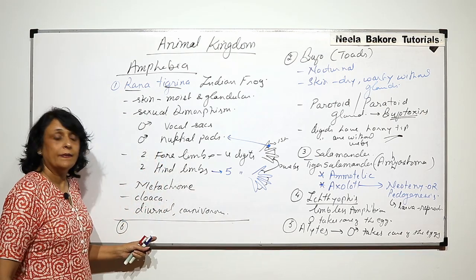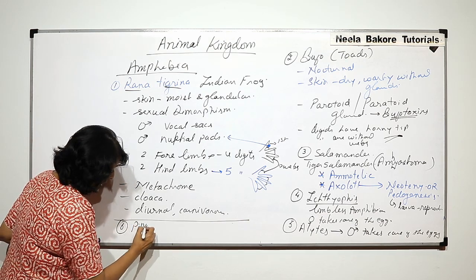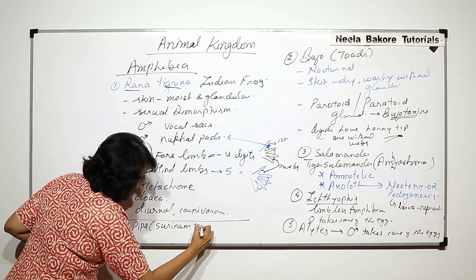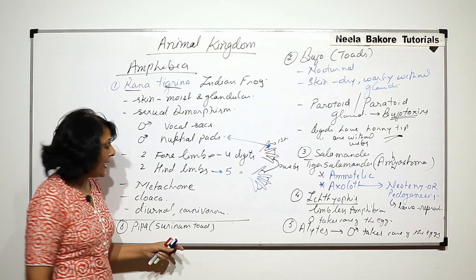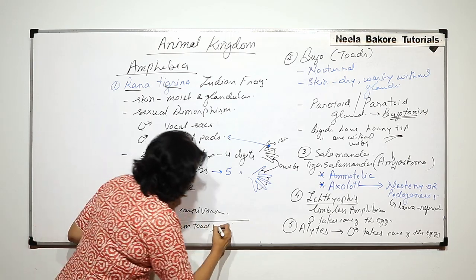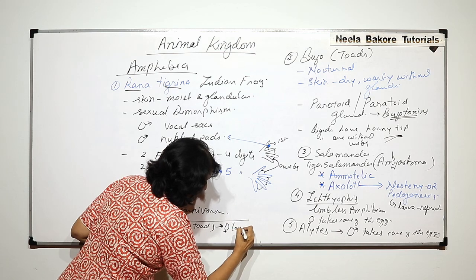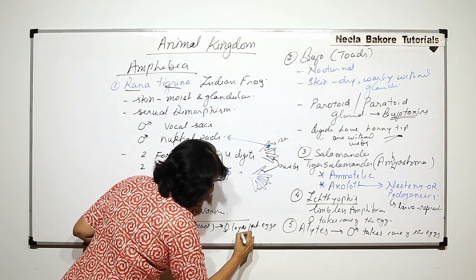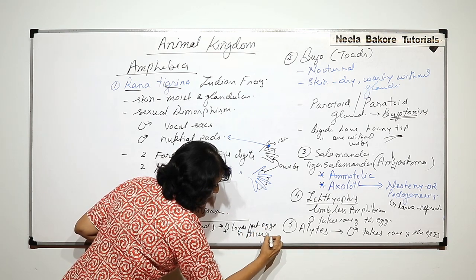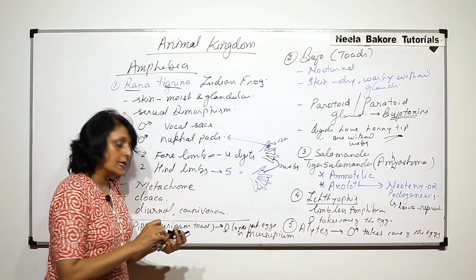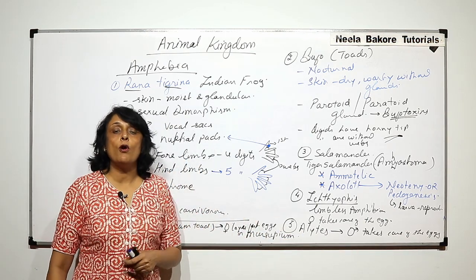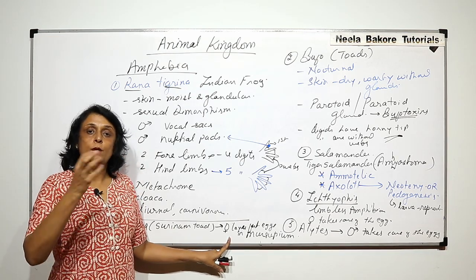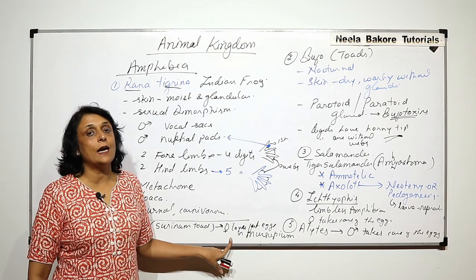The sixth example is Pipa, known as the Surinam toad. The important thing is that the female lays fertilized eggs in a marsupium — a pouch-like structure or fold of skin. The fertilized eggs are laid in this pouch, and the larvae or tadpoles emerge from that pouch.